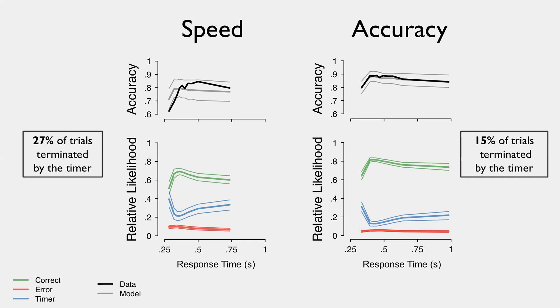We see a similar shape on the relative likelihood panel in the lower half, but more separation between the correct and the timing accumulators, as we'd expect when people are trying to be more careful about the decisions. And we see fewer decisions overall terminated by the timer.